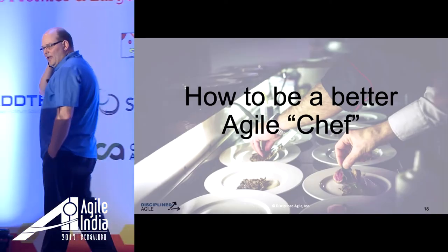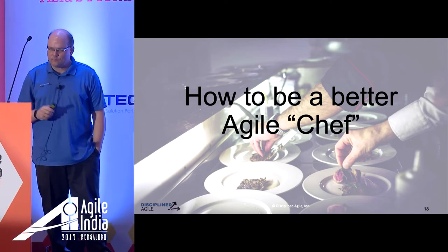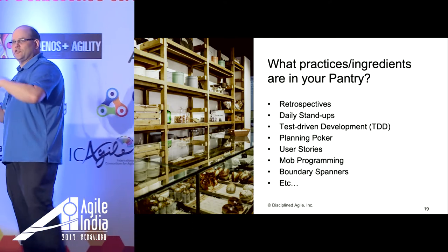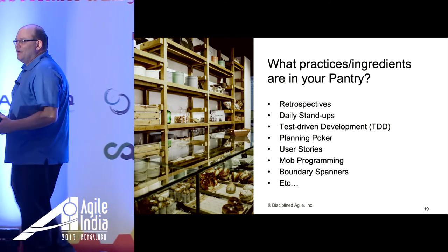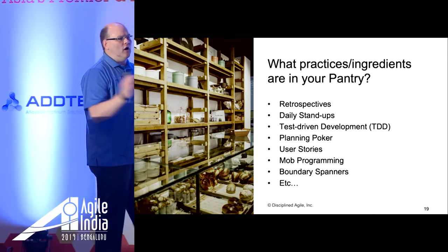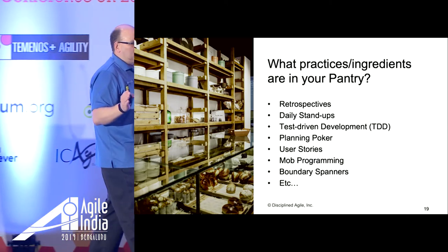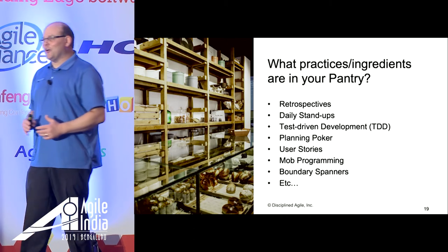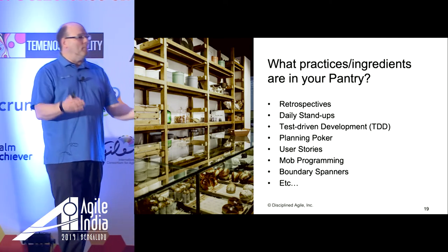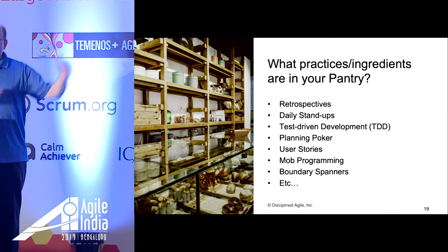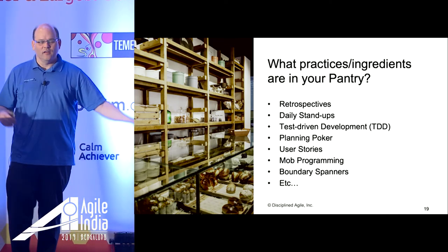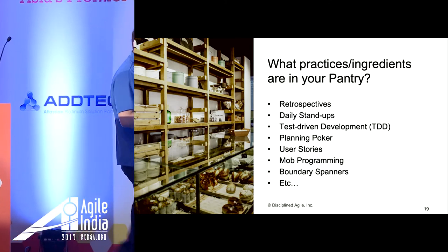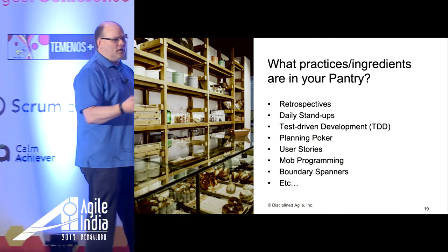From an Agile point of view, we have all these ingredients — test-driven development, planning poker, user stories, mob programming, pair programming, continuous integration. There are hundreds, maybe thousands of practices. At this conference this week there will be hundreds of good ideas presented by the various speakers — and they'll contradict each other, of course, but it's all good stuff. How do you choose between all those things? How do you even know about them? You can't possibly sit in on every talk. The point is there are lots of great practices and ideas out there.